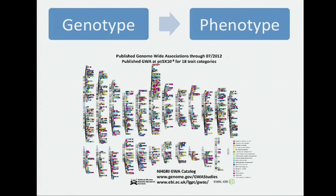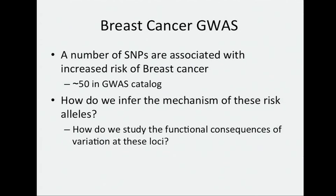The Genome-Wide Association Study is a widely used method for investigating this relationship between genotype and phenotype on a genomic scale. Breast cancer has been widely studied with the Genome-Wide Association Study, and if we look at the GWAS catalog, we see about 50 risk alleles which predict risk of breast cancer.